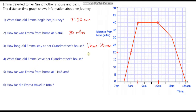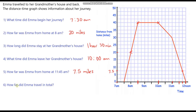Question four: what time did Emma leave her grandmother's house? We've just worked that out — she left her grandmother's house at 10 o'clock in the morning. Question five: how far was Emma from home at 11:45am? This is 11, this is 12, and this is 11:30am. So 11:45am is exactly halfway between 11:30am and 12am. Going up to the line at that point and across to the distance axis, it is halfway between 5 and 10, which is 7.5 miles from home.